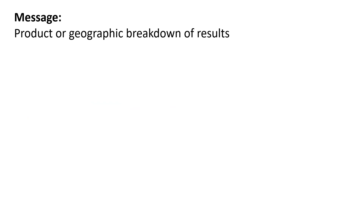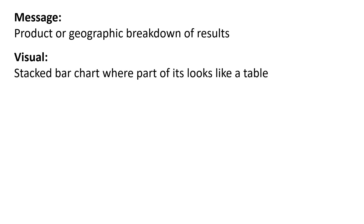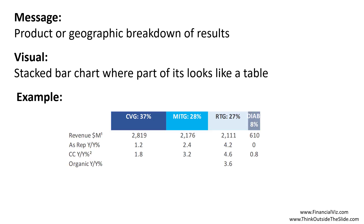So when you have to present the product or geographic breakdown of financial results, consider using a stacked bar chart — one where part of the chart actually looks like a table. Our example showed how you can have segments representing the percentages, with the related information right underneath. This makes it so much easier for the audience to relate that information to the segment, and it doesn't separate them as in the original, where they had pie charts at the top and a set of tables down below.